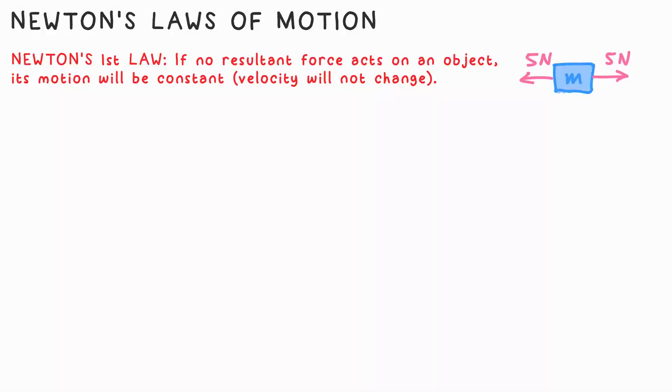Newton's first law is this: when there's no resultant force, an object's motion is constant. In other words, no change in velocity. That could be because there's no forces acting or the forces are balanced.